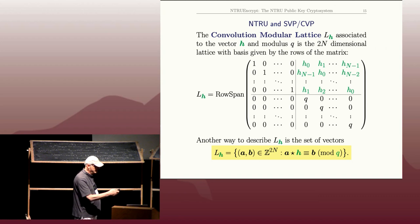Nice exercise to show that these give the same lattice. Essentially this matrix here is embedding what the convolution product looks like with these shifts.